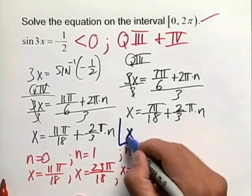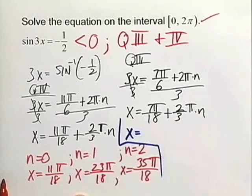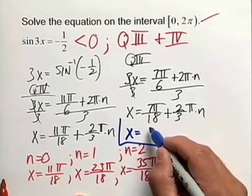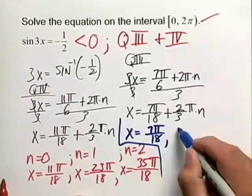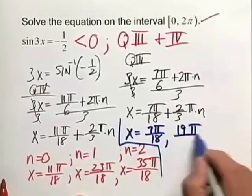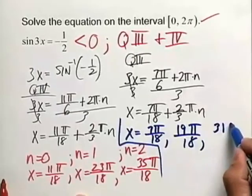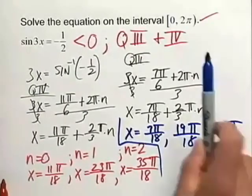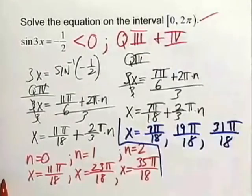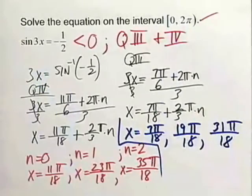And you can verify this independently. But if we solve this equation, plugging in 0, 1, and 2 for n respectively, we end up with values of 7π/18ths, 19π/18ths, and then also 31π/18ths. So these are the six solutions in the interval from 0 to 2π of the trig equation sine of 3x is equal to negative 1 half.